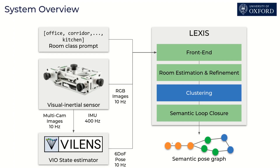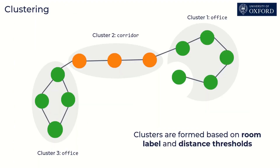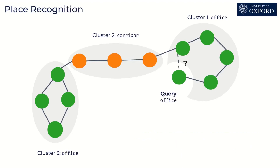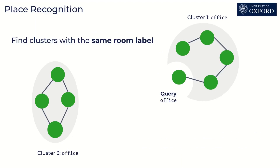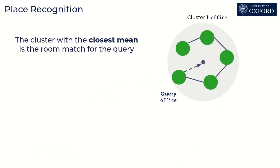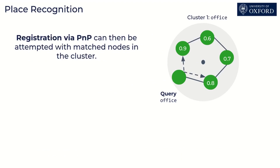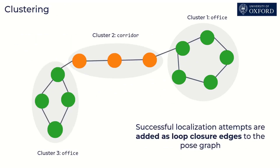We can also exploit this representation for efficient place retrieval without the use of additional models. We form clusters by grouping together nodes that are within a certain distance threshold and have the same label. For each new query, we first determine its room label. We narrow the search to the clusters with the same label and compare distances from the query to the clusters. We consider the closest cluster to be the match. We use the cosine similarity within the cluster to refine the search and attempt a geometric verification using PNP.